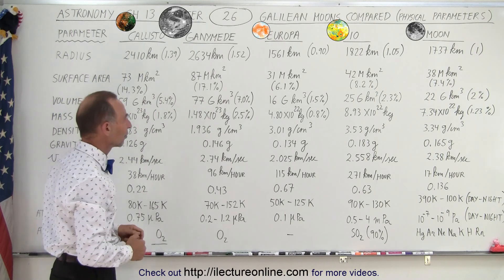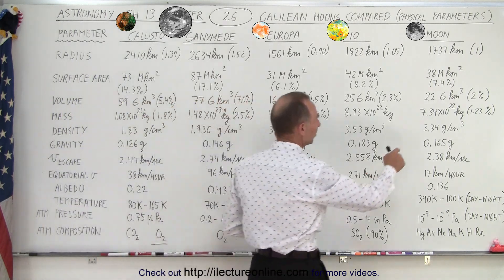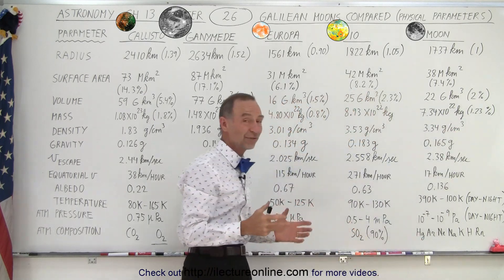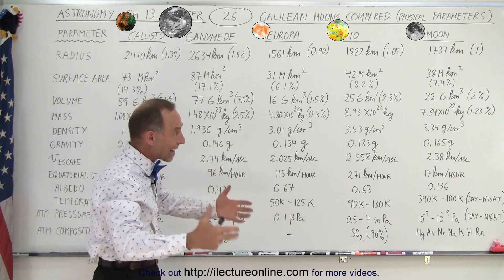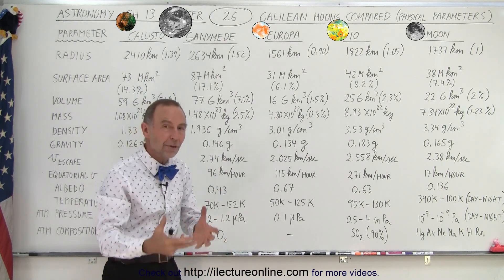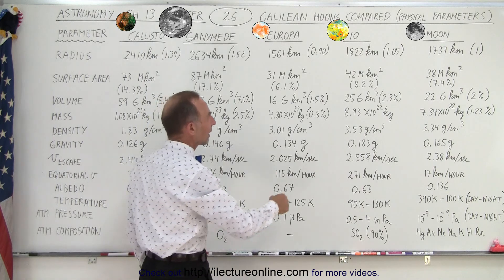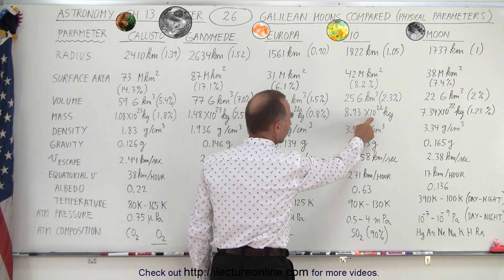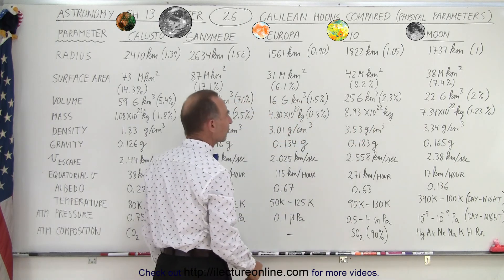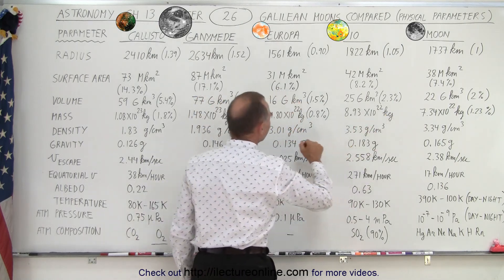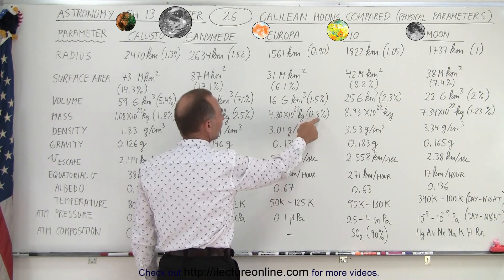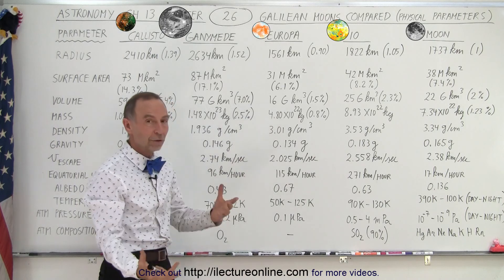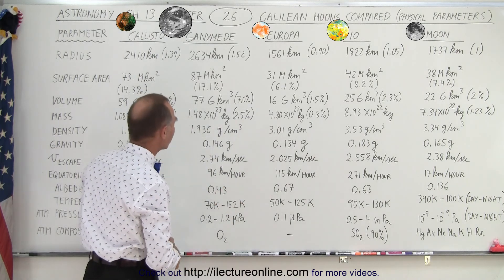If we then look at the mass, notice the moon's mass is about 7.3 times 10 to the 22nd kilograms, which is 1.23% the mass of the Earth. That means you need about 80 moons to be equivalent to the mass of the Earth. Notice that Io is a little bit more massive at 8.93 times 10 to the 22 kilograms, so you might need about 75 Earths. 4.8 times 10 to the 22nd, so less than 1% the mass of the Earth. You need more than 100 Europas to come up with an equivalent mass for the Earth.